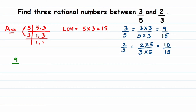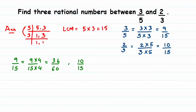So 9/15 will be multiplied by 4 in both the numerator and denominator: 9 × 4 = 36, and 15 × 4 = 60, giving us 36/60. Similarly, 10/15 multiplied by 4 gives us 10 × 4 = 40 in the numerator and 15 × 4 = 60 in the denominator, so 10/15 becomes 40/60.